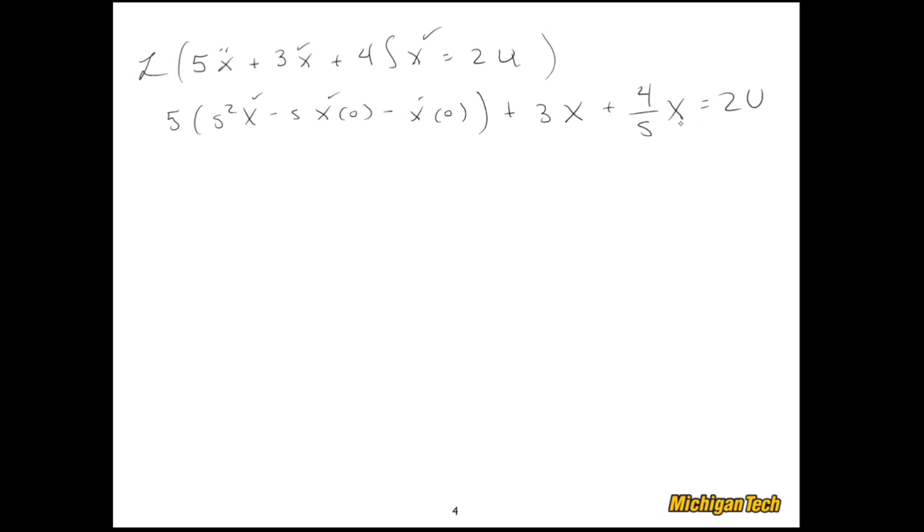Now I could multiply through the whole thing by this s. And so there, I'll get 5s cubed capital X minus s squared x zero, minus s x dot zero, plus 3s X, plus 4X equals 2sU capital U.